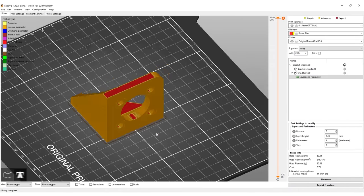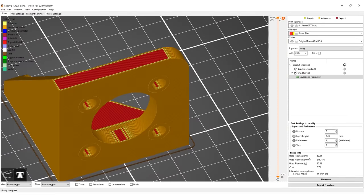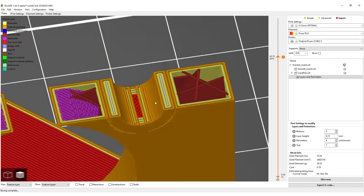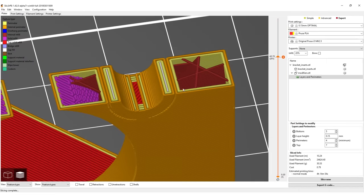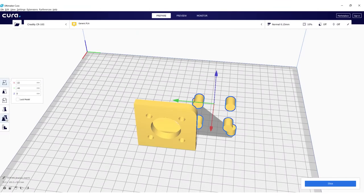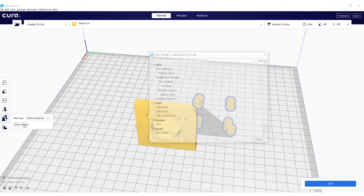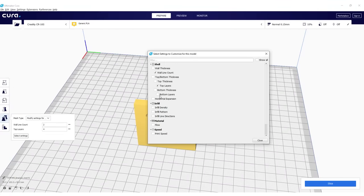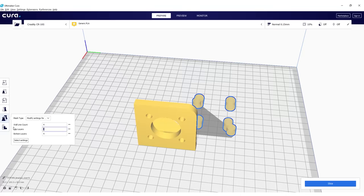Unfortunately Slic3r doesn't leave a closed outer shell and creates seams where the modifier mesh penetrates the main part. Cura works way better in this regard and nicely only reinforces the areas you intended without being visible from the outside.